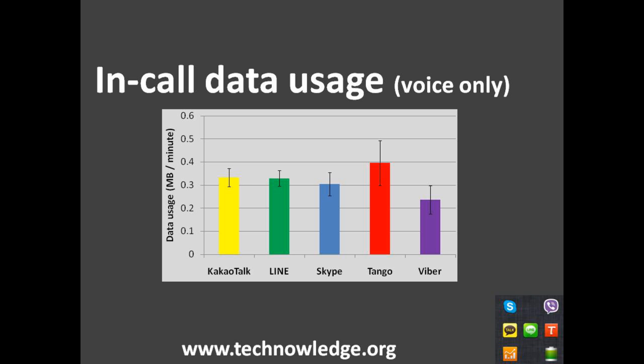The first thing that stands out is that the Viber app uses significantly less data per minute — in megabytes per minute for voice calls — than all the other apps. Tango uses the most, about one and a half times more than Viber. KakaoTalk, Line, and Skype are more or less on par with each other, so there's not much to choose between them. Viber uses the least at around 0.25 megabytes per minute, while Tango uses about 0.4 megabytes per minute. It's not a lot in total, but if you use it a lot, those differences can become material.